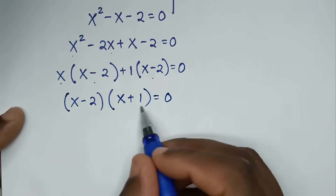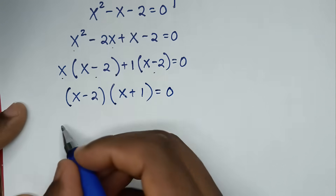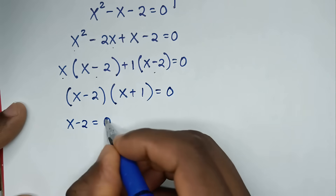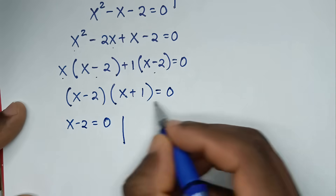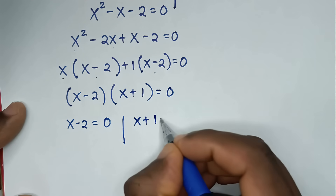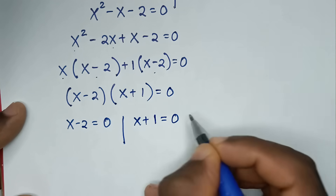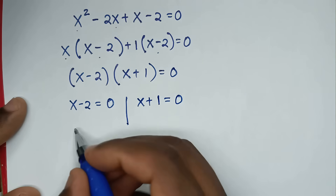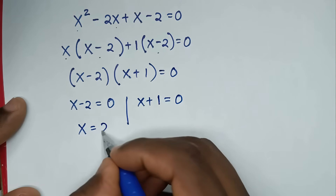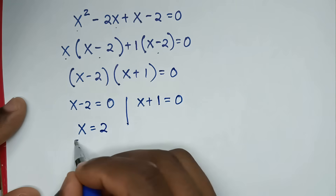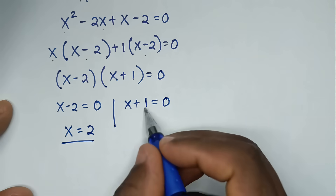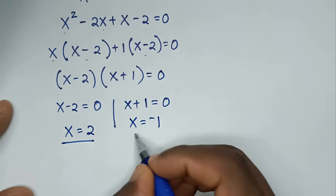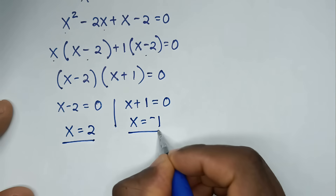Now into here we have two solutions: x minus 2 equals 0, and x plus 1 equals 0. Taking negative 2 to this side gives x equals 2, that's the first solution. Taking 1 to this side gives x equals negative 1, that's the second solution.